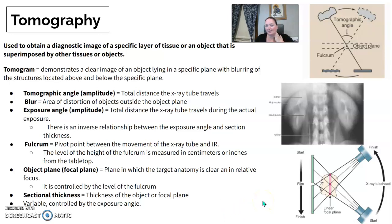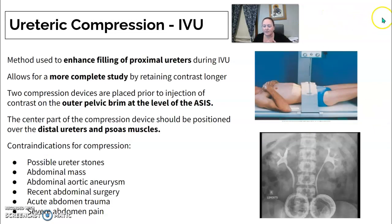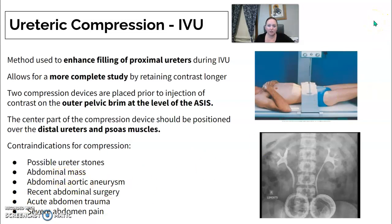Compression is another technique — though rarely seen today — used to enhance filling of the proximal ureters. A compression device is placed over the patient to allow for a more complete study. However, compression should not be used if there are possible stones, masses, recent surgery, or severe pain.